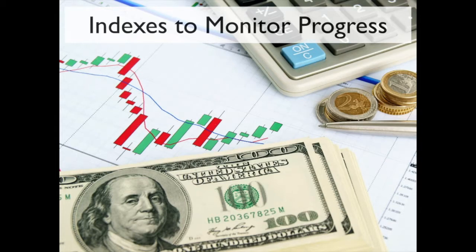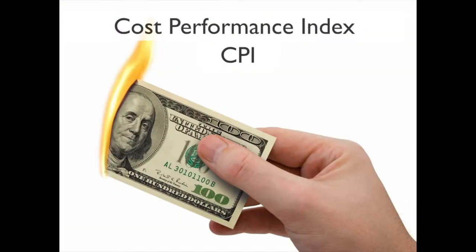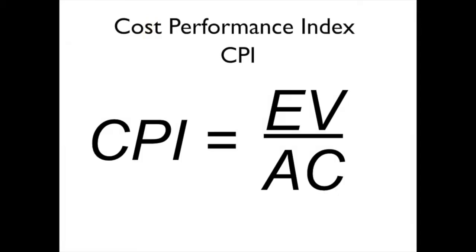We're going to look at the first of several indices that we can use to monitor our project progress. The first one is CPI, or Cost Performance Index. It measures the cost efficiency of the work accomplished to date — basically, are we burning through the money at the rate that we thought we would? CPI is calculated by taking the earned value divided by the actual cost.